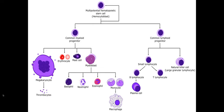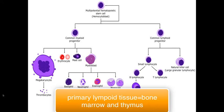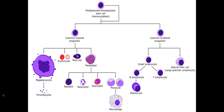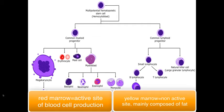Let's start with their origin. Your T lymphocytes are originated from your primary lymphoid tissue, essentially your bone marrow and your thymus. In this part we're going to talk about the bone marrow, especially the red bone marrow which is the active site of production.